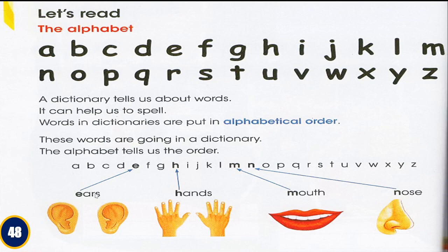For E we have ears and also the picture of two ears. H, we have hands and the picture of two hands. For mouth, we have the picture of a mouth. For N, the word is nose and we have the picture of the nose. Page 48 is all about the dictionary, the words, and alphabetical order.